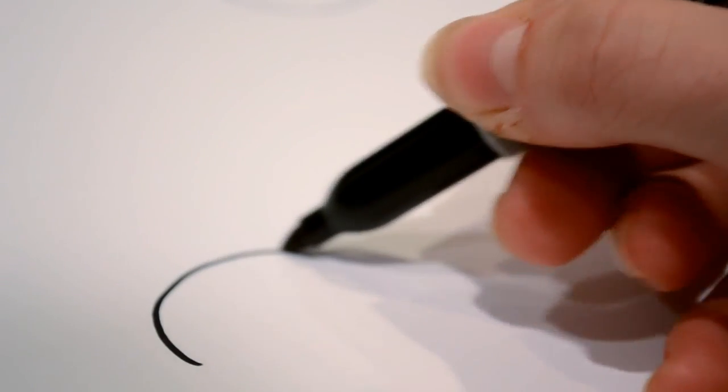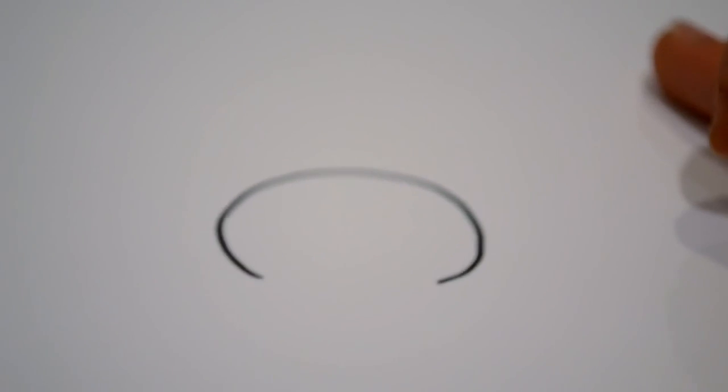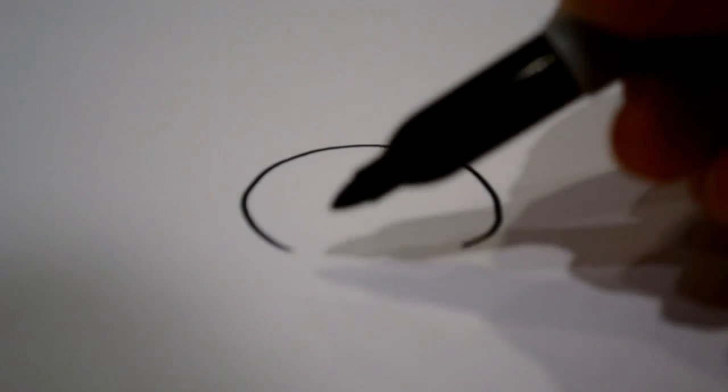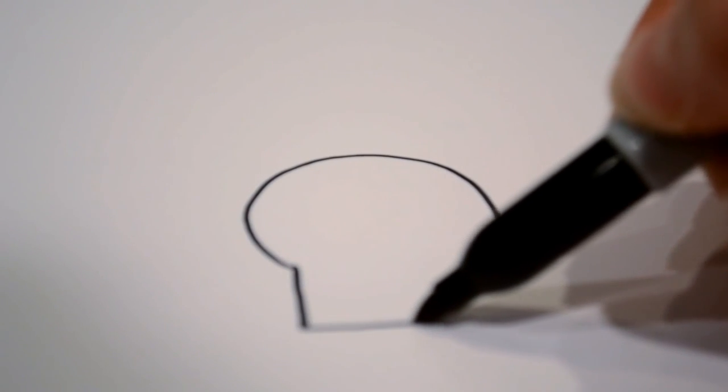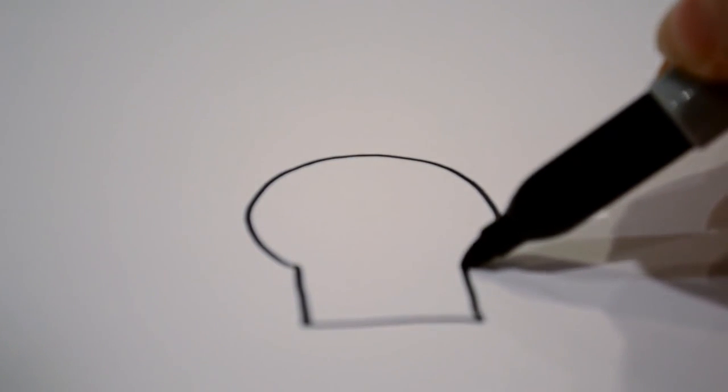So first you're going to start out by drawing sort of a circle shape, but you're not going to completely close it off. It's going to look something like that. And then next you're just going to want to close it off with sort of a partial square shape.